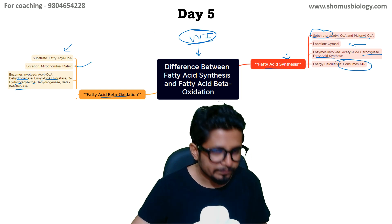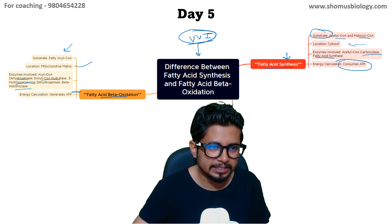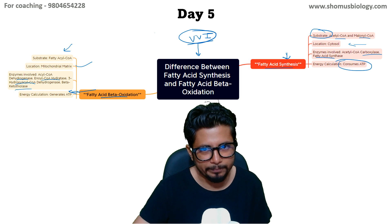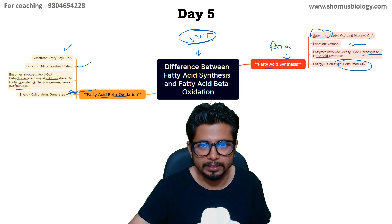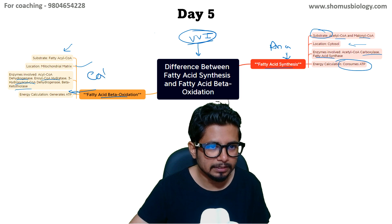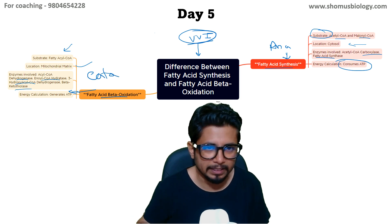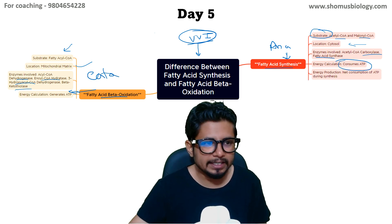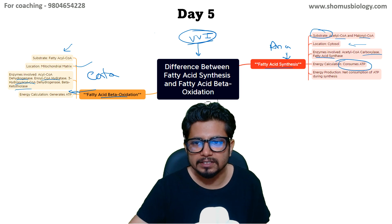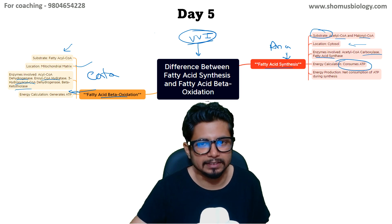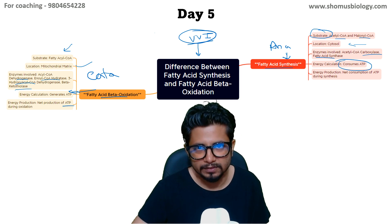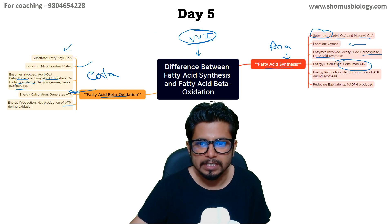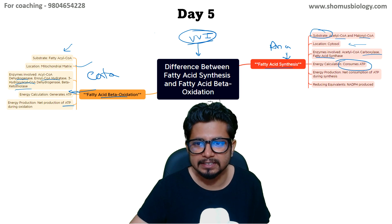For energy: fatty acid synthesis consumes ATP, while fatty acid beta oxidation generates ATP because it is a catabolic pathway. Fatty acid synthesis is an anabolic pathway. There is net consumption of ATP during the synthesis process, while in beta oxidation there is net production of ATP.